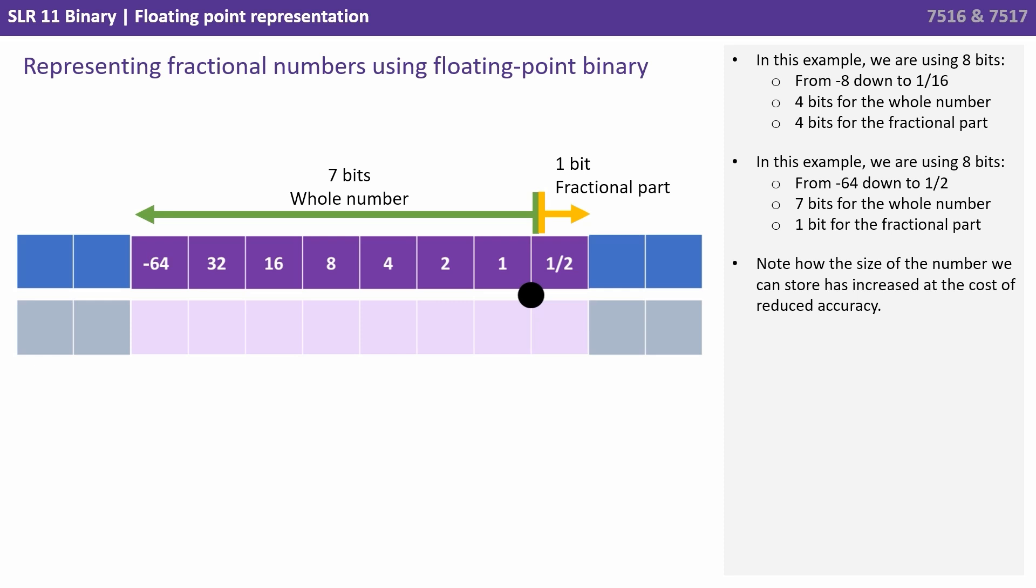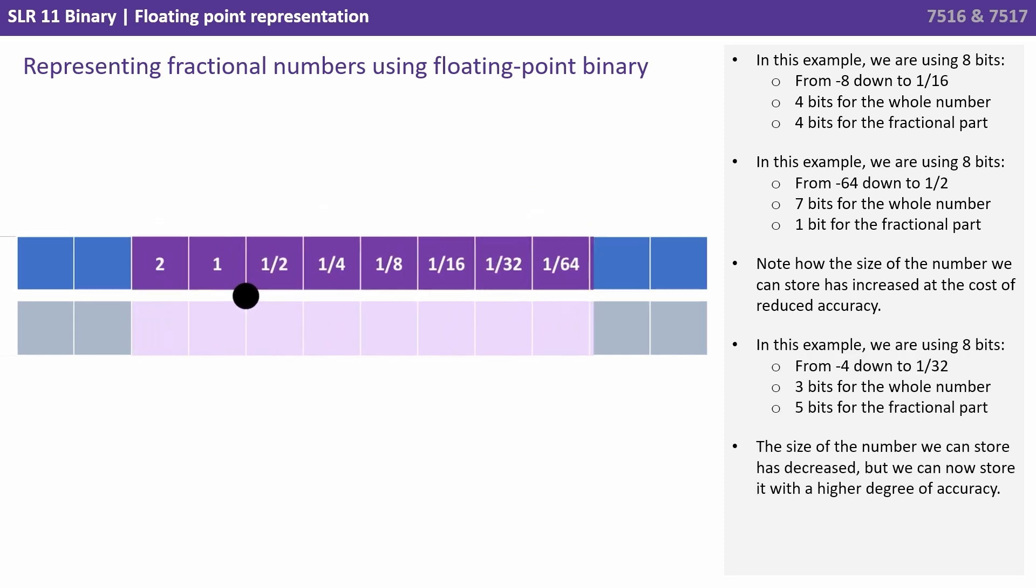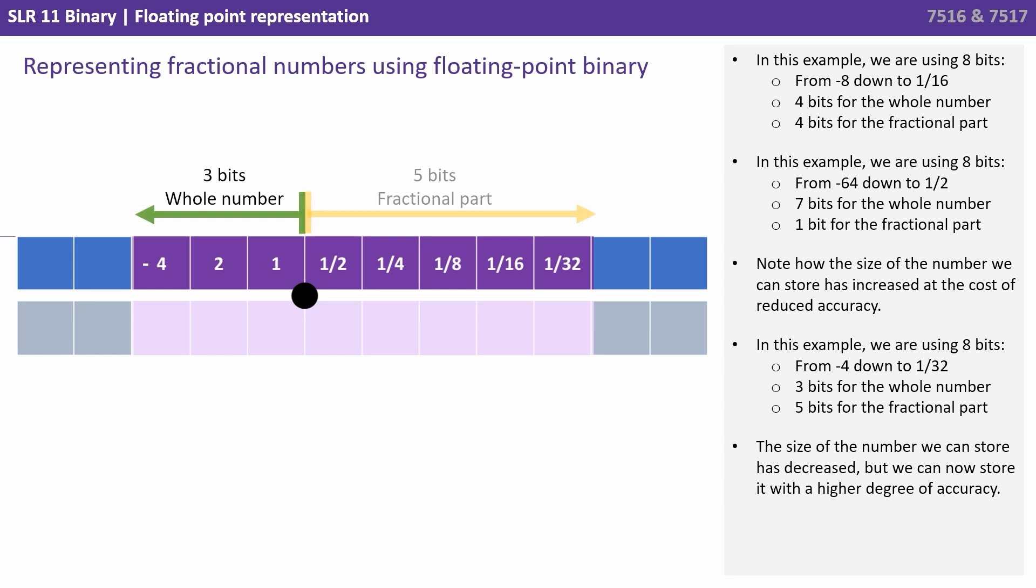Note how the size of the number we can store has increased at the cost of reduced accuracy. In this example, we're storing numbers from minus 4 to 1/32. We're only using 3 bits for the whole number and allowing 5 bits this time for the fractional part. The size of the number we can store has decreased, but we can now store the number with a higher degree of accuracy or precision.